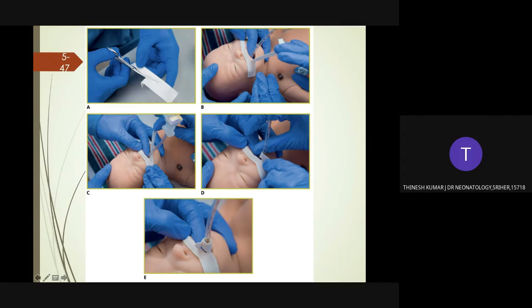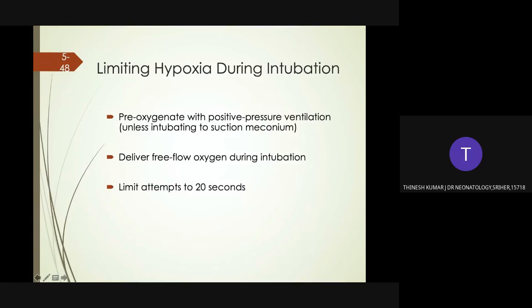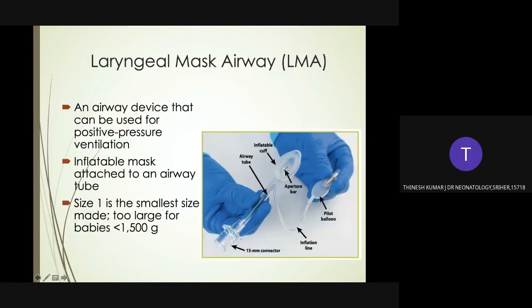If the tube will be left in place beyond the initial resuscitation, take a chest X-ray for final confirmation of placement. During intubation, to limit hypoxia, give pre-oxygenation with positive pressure ventilation, deliver free-flow oxygen during intubation, and limit attempts to 20 to 30 seconds. Next we move on to the alternative airway — the laryngeal mask airway.